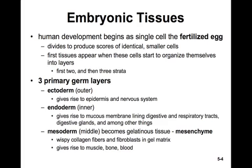Ectoderm is the outer layer — 'ecto' meaning outside — and it gives rise to the epidermis and the nervous system. Endoderm — 'endo' meaning inside — is the inside layer and gives rise to the mucous membranes and linings of the digestive and respiratory tracts, the digestive glands, and many other things.